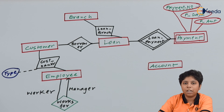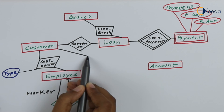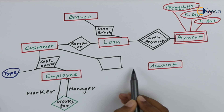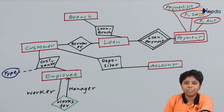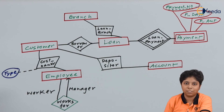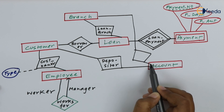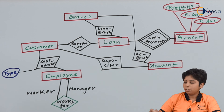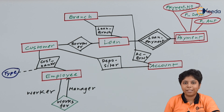From the Branch to the Loan we have the Loan-Branch relationship, indicating from which branch the loan originates. From Customer to Account there is the Depositor relationship, indicating whether the customer has deposited to their account. The last relationship is Account-Branch, showing that an account belongs to a specific branch. These are all the relationships in the banking enterprise ERD.